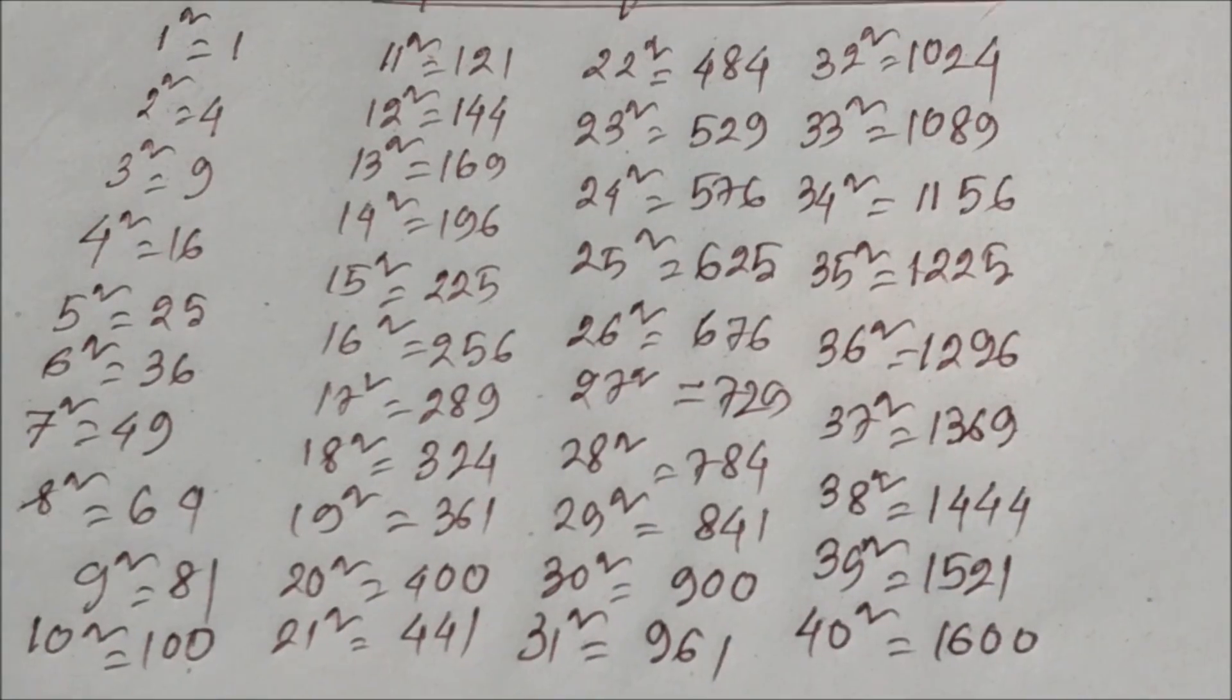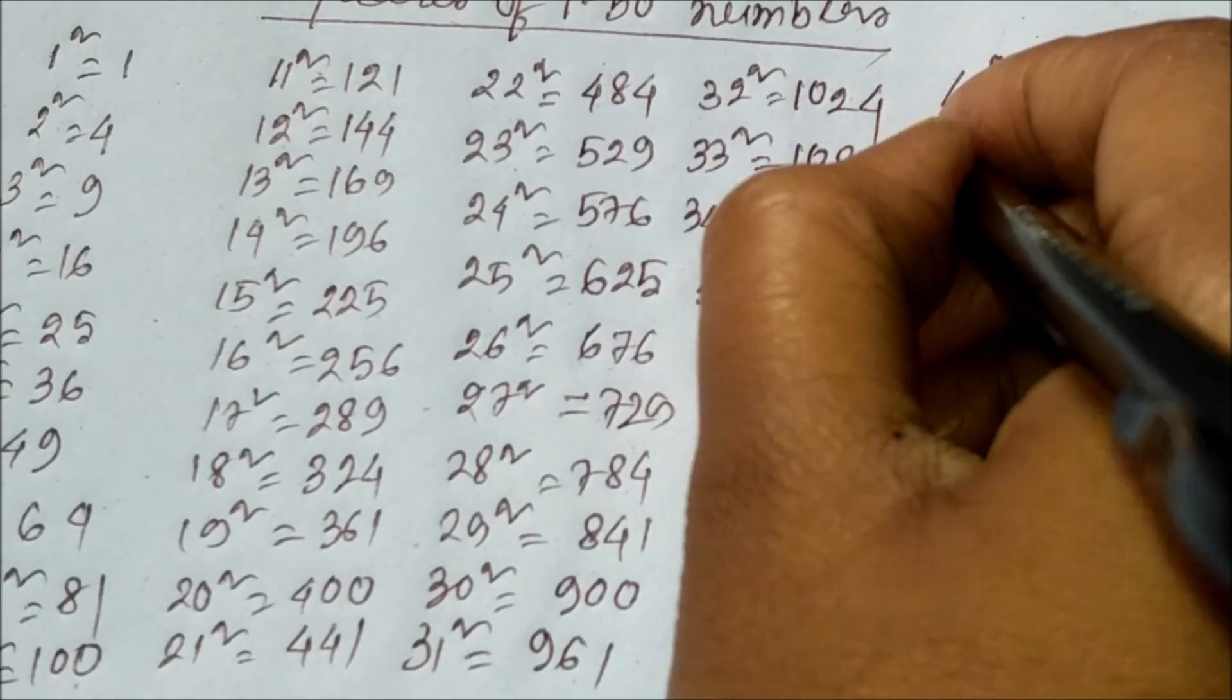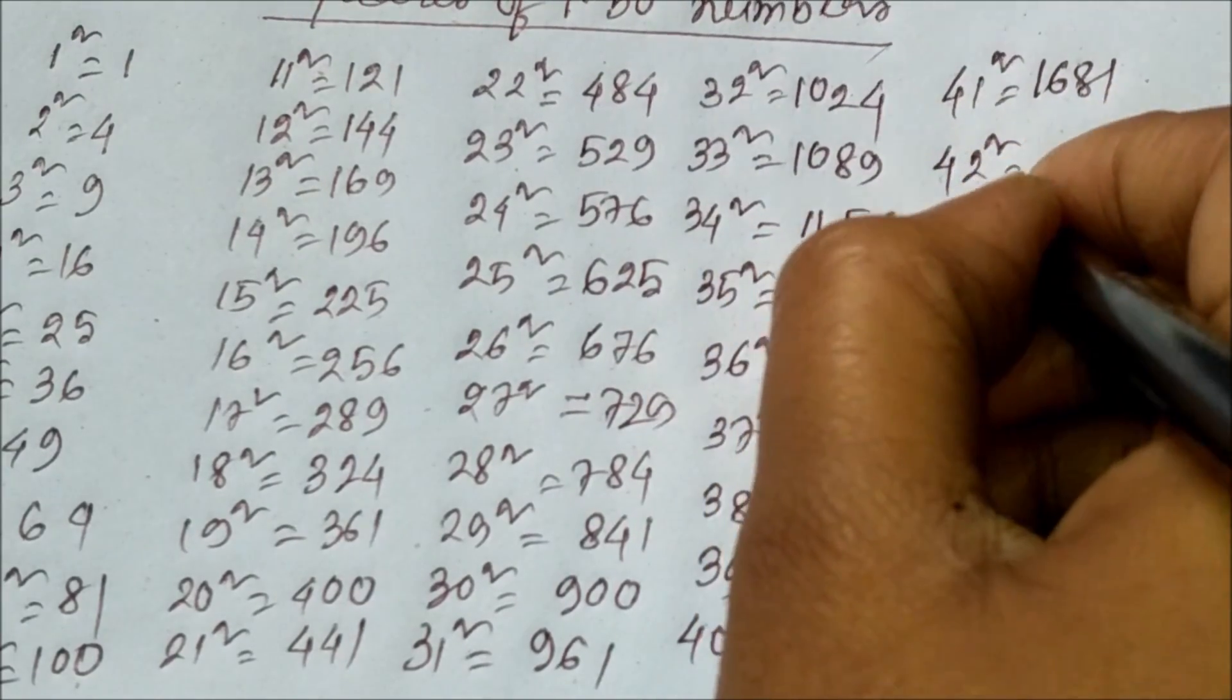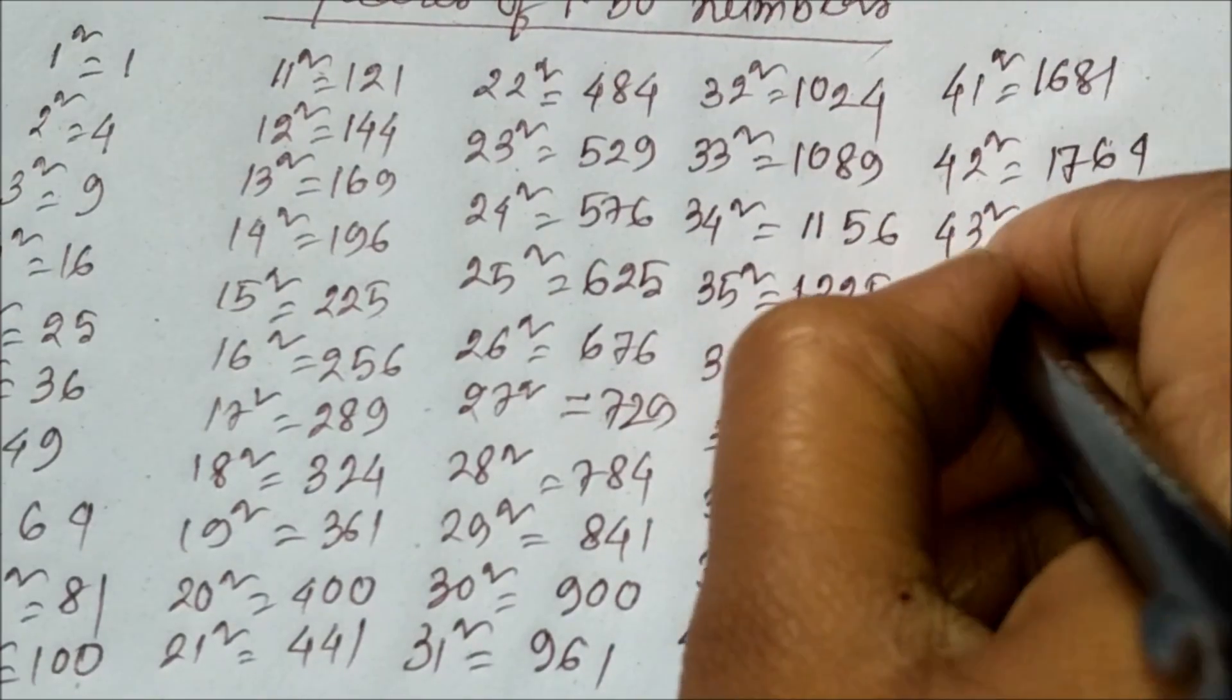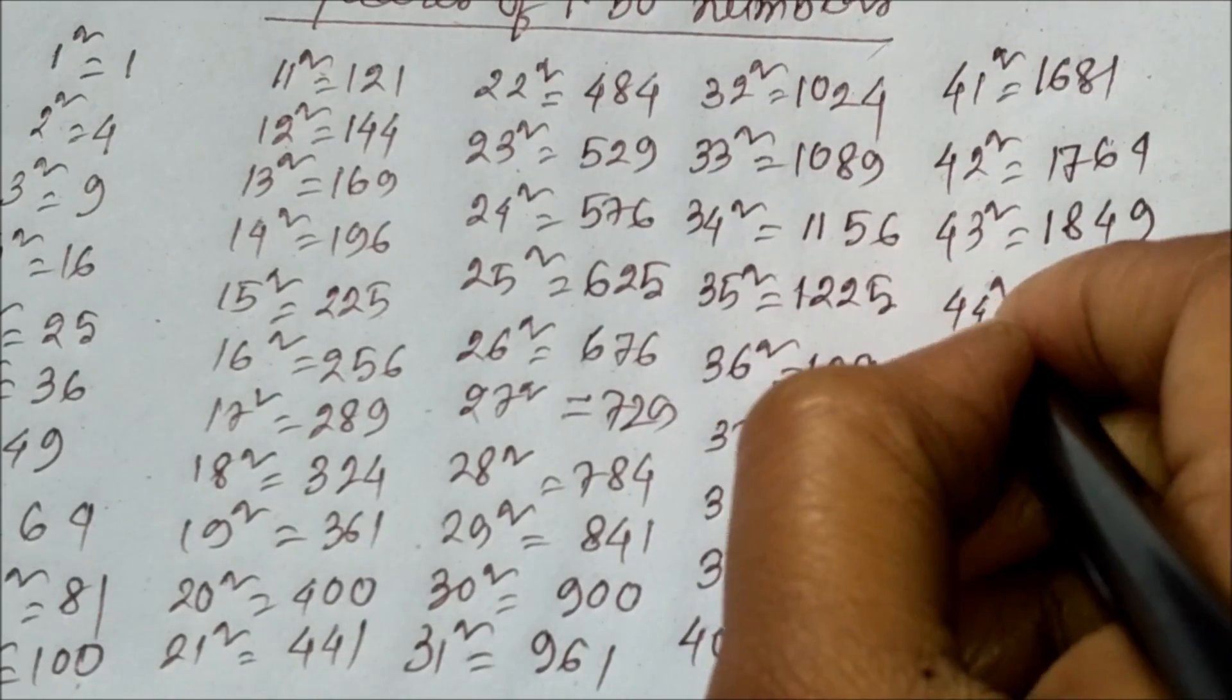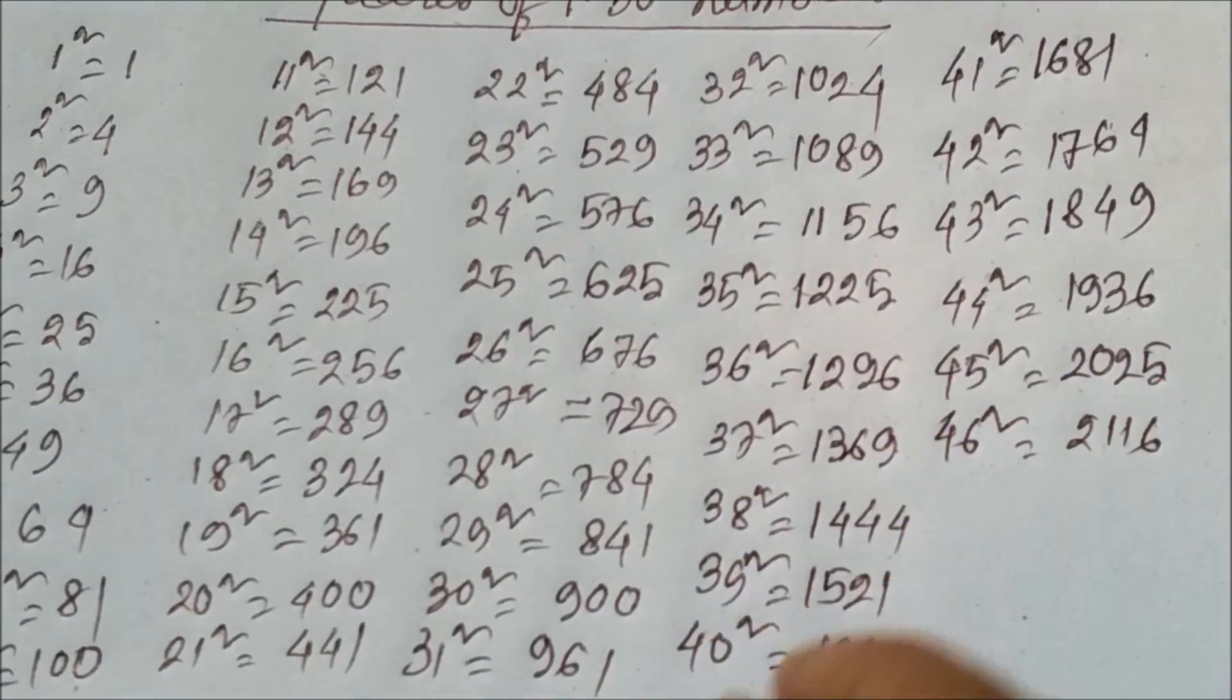41 square equals 1681, 42 square equals 1764, 43 square equals 1849, 44 square equals 1936, 45 square equals 2025, 46 square equals 2116.